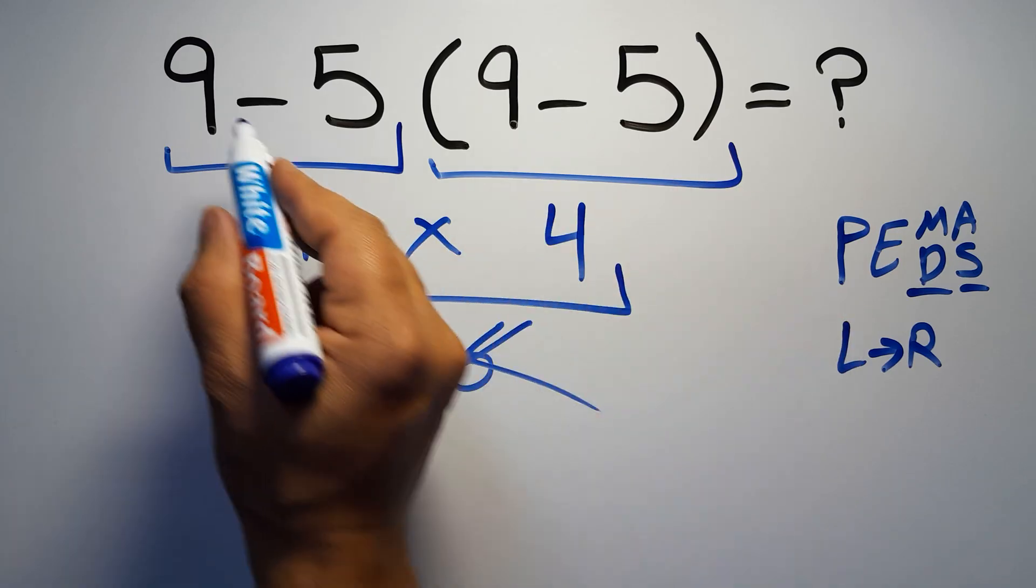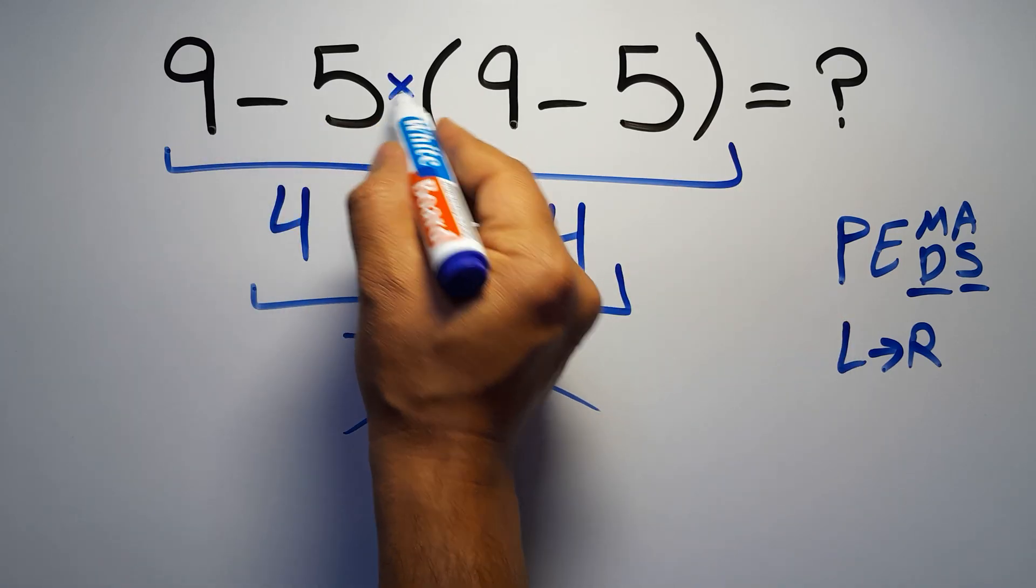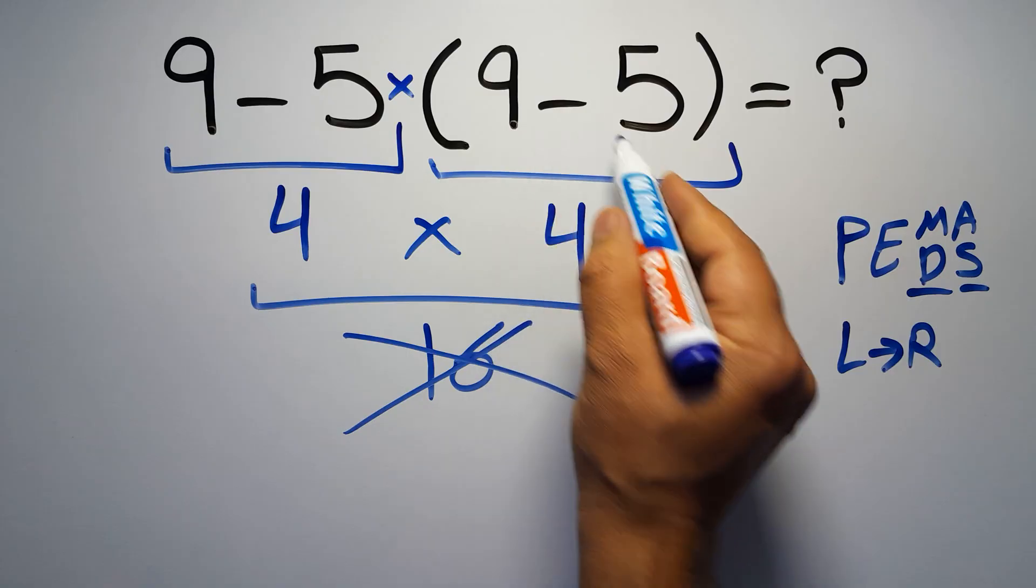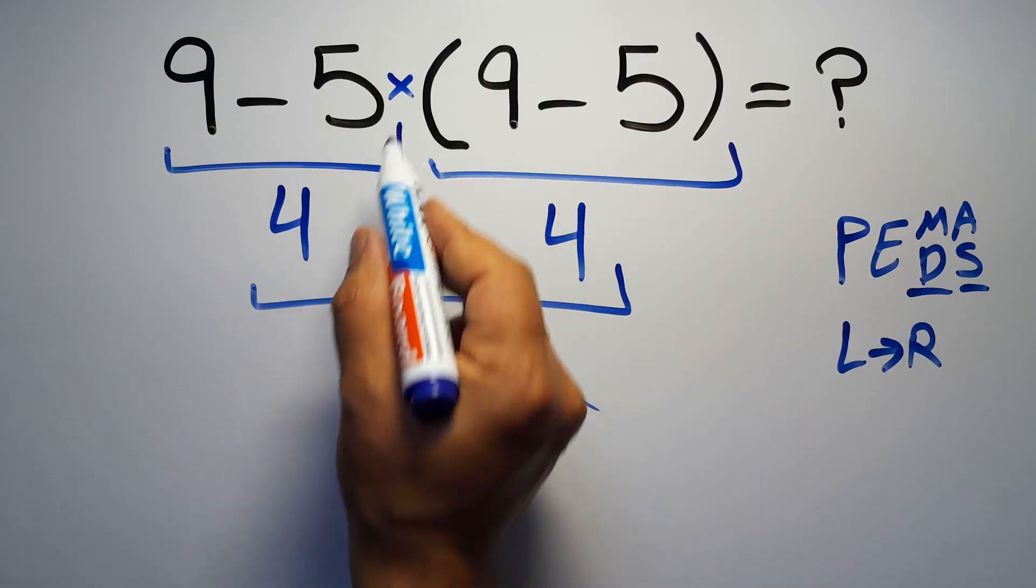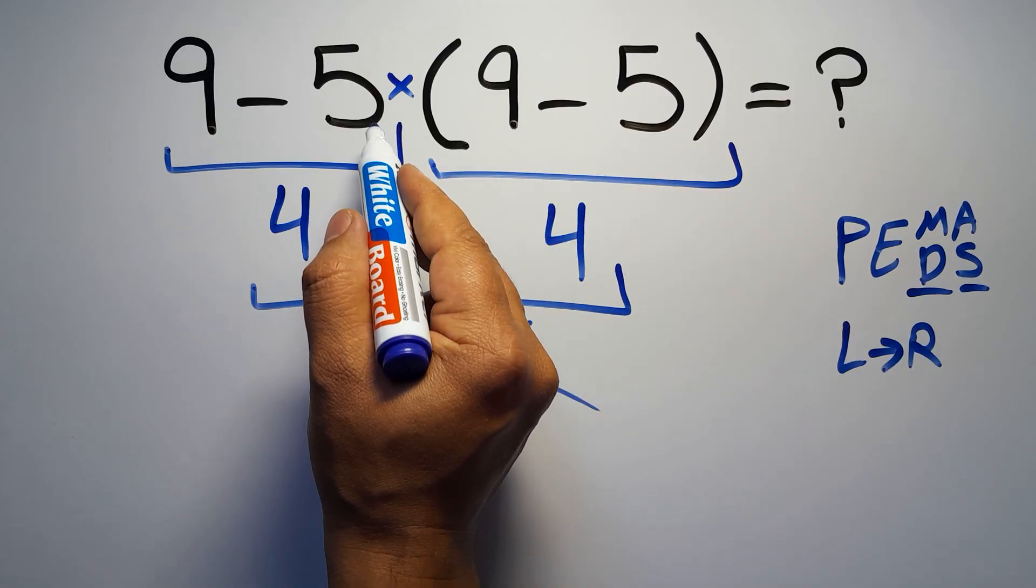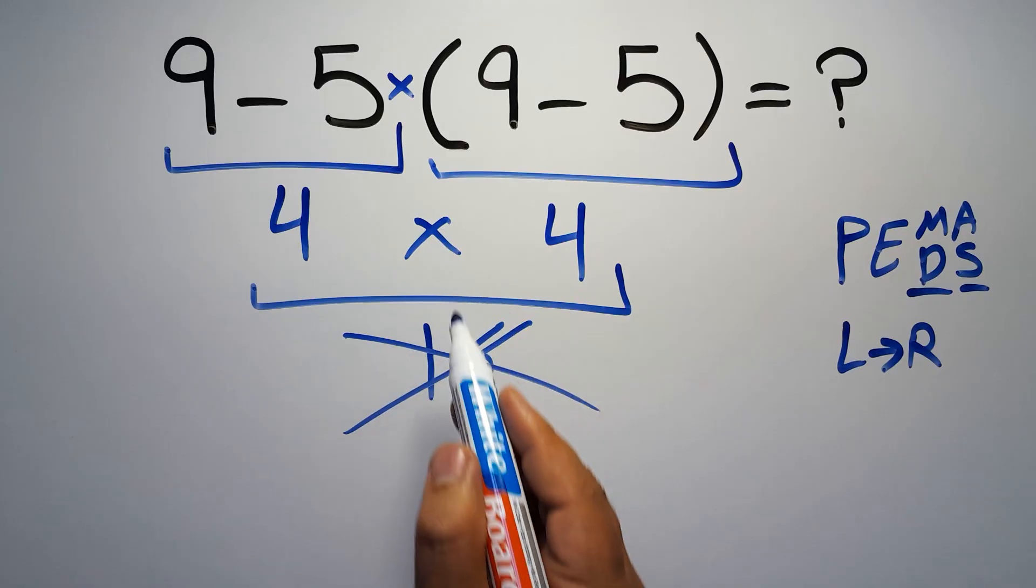In this expression we have 1 subtraction, 1 multiplication, and 1 parenthesis. Inside this parentheses we have 1 subtraction. Here we have a multiplication. Because in mathematics when a number is placed next to parentheses it means multiplication.